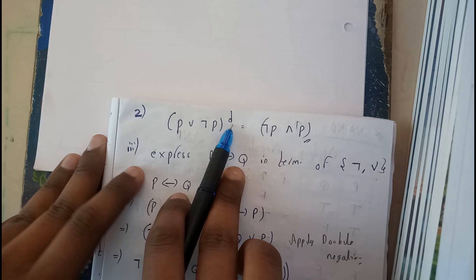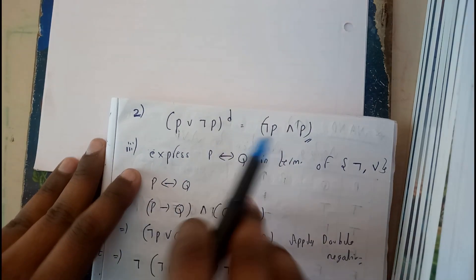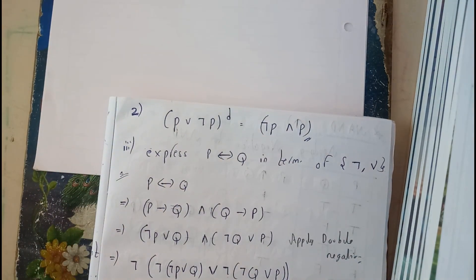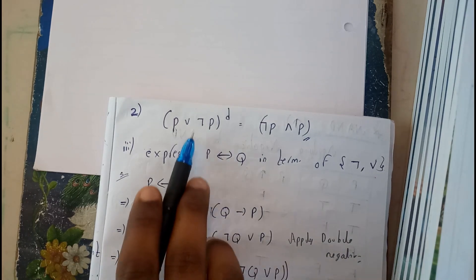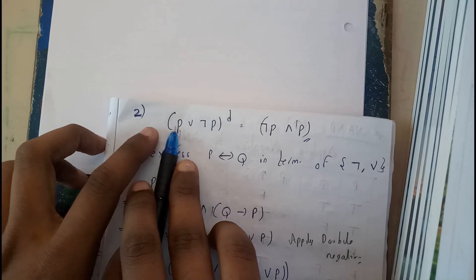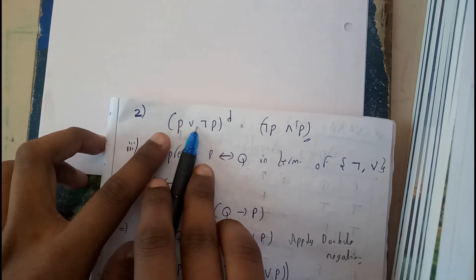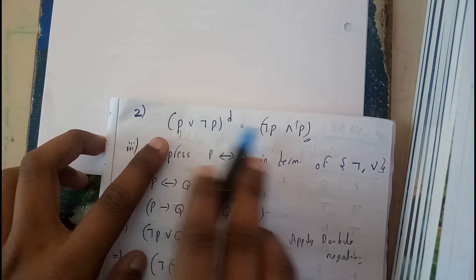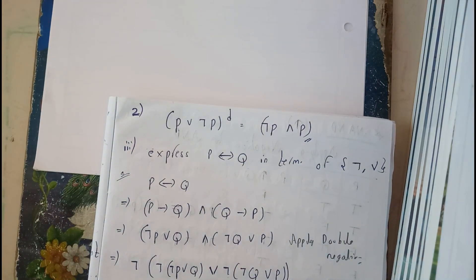There's nothing more than applying the whole negation: negation of P AND P AND P. I hope everyone understood. Here there is another example. Let's go through it: express P double implies Q in terms of negation and OR.